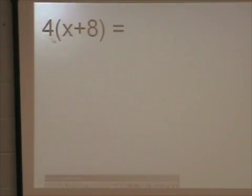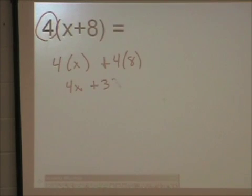Here, I have to distribute the 4 times everything in the parentheses. 4 times x plus 4 times 8. 4 times x is 4x. 4x plus 4 times 8 is 32. I cannot add 4x plus 32. They are not like terms. 32 does not have an x. So, this is my final answer right here.